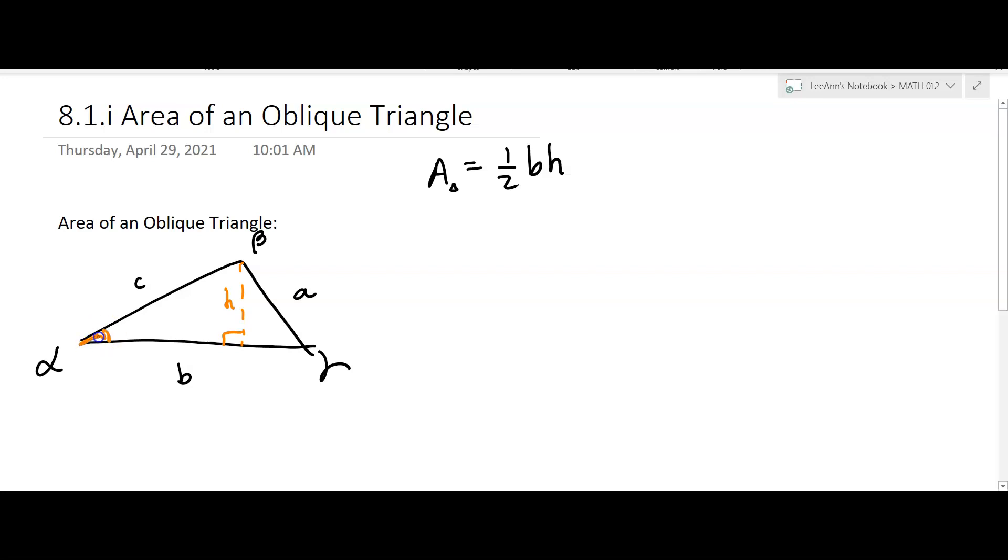know this angle here, alpha. Then H is going to equal—let me write out the trick for you. The sine of alpha would equal H over C, right? So H would equal C sine alpha.